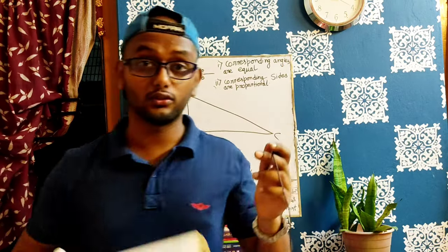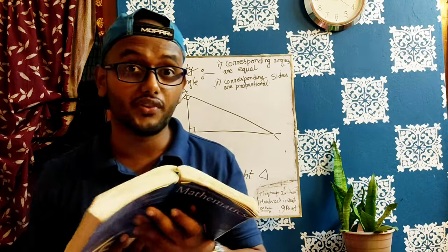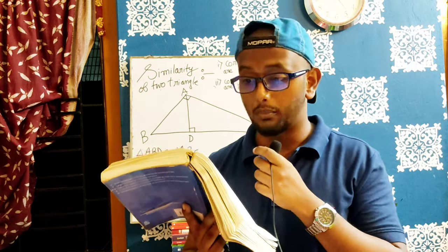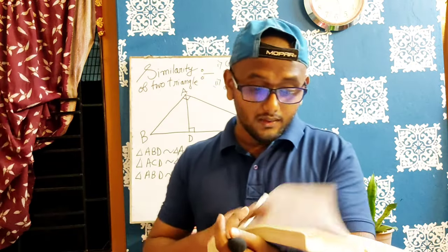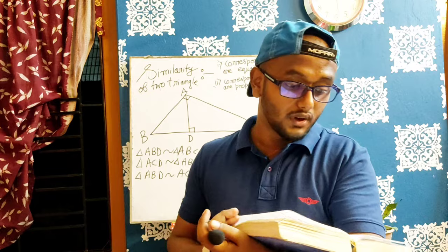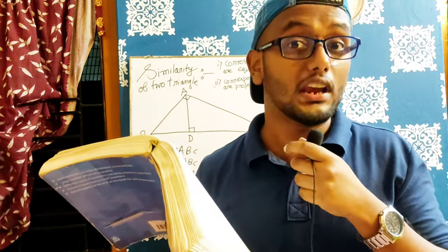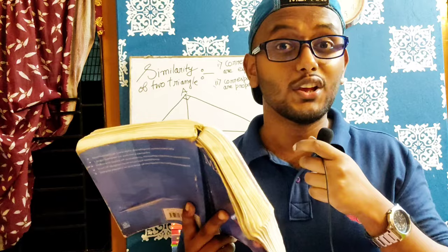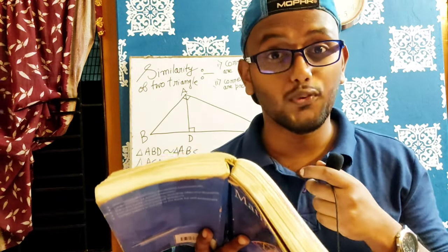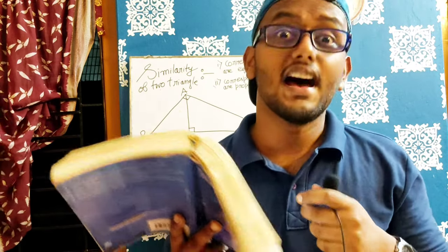That's all from the similarity of triangles. The main theorem is this — you can use it and prove it. That's all for the similarity of triangles. Thank you everyone.